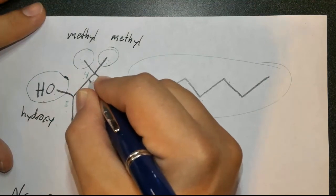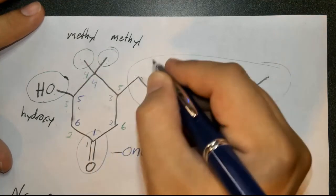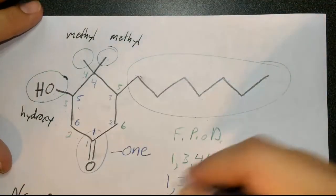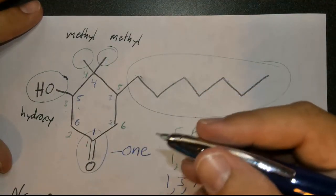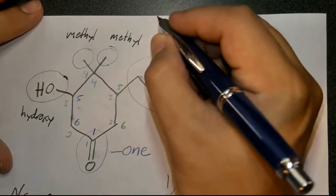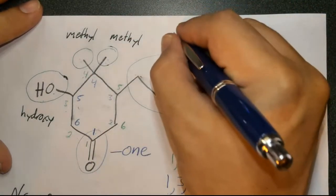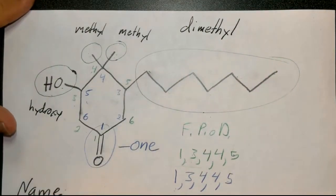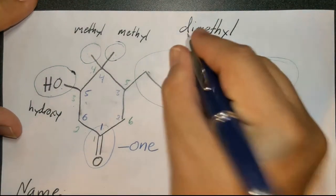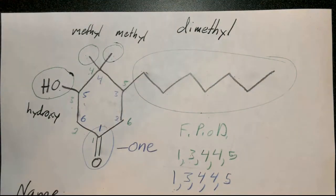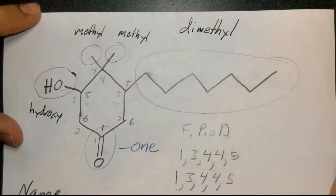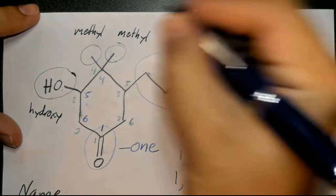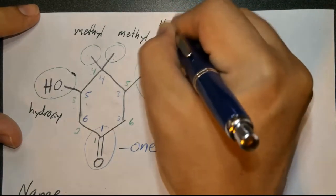It's not because they're on the same carbon that we combine them — it's because wherever you find identical substituents in the molecule, you collect them all and count them. Instead of naming it methyl-methyl or having methyl twice, you say dimethyl. And because they could potentially be on different carbons, you do have to identify where each one is. They're both at the four carbon, so it's 4,4-dimethyl. The official IUPAC rule is you have to write all locants even if they're identical.